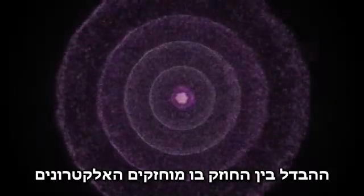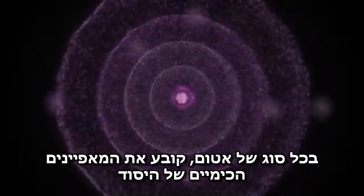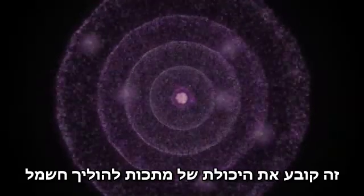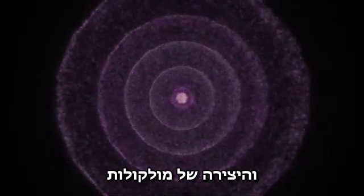It is this difference in how tightly electrons are held in each different kind of atom that determines the chemical properties of the element. This accounts for the ability of metals to conduct electricity, the aloofness of noble gases, and the formation of molecules.